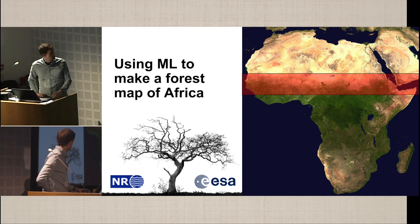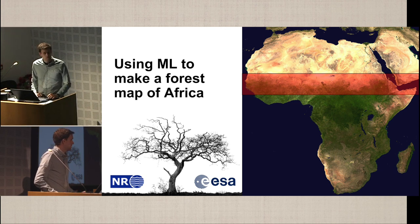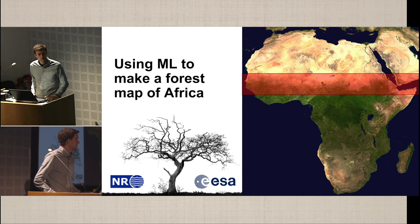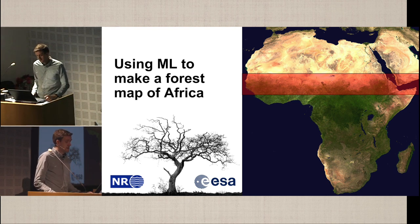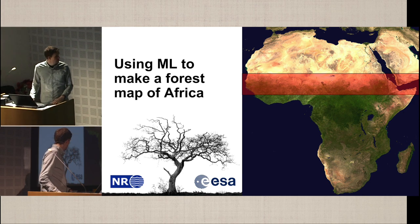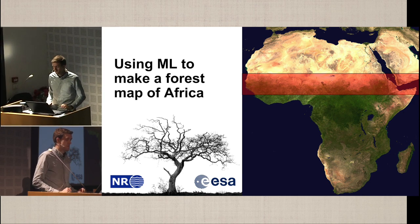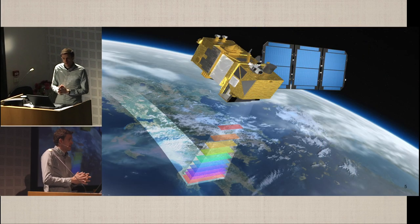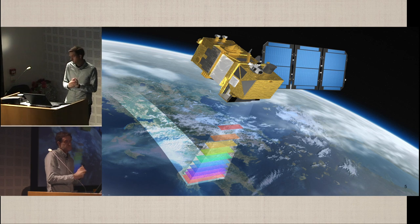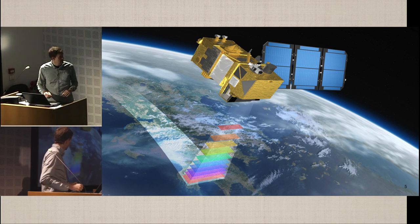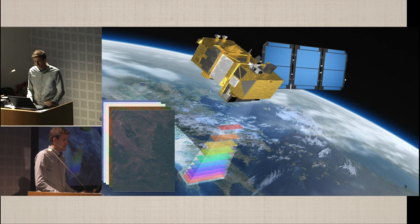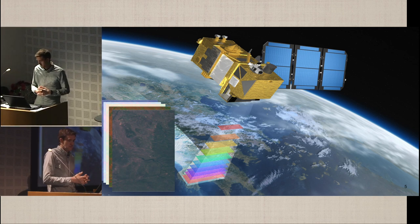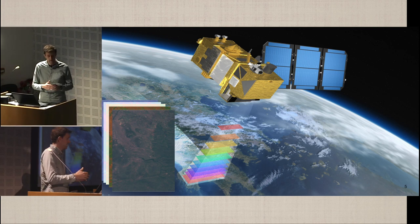The use case we decided to look at was to see if we could make an algorithm to monitor forest using satellite images. At the southern border of Sahara, it's typically dry forest. The input data in our machine learning setup would be satellite images from the Sentinel-2 satellite, which takes optical images with different channels: red, green, blue, infrared, and some more.